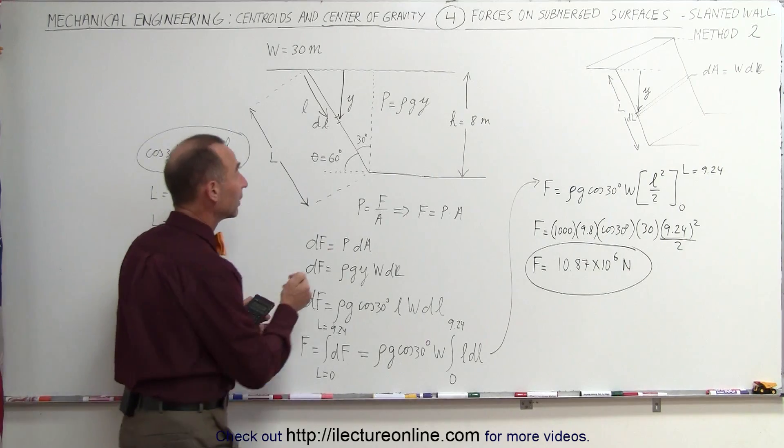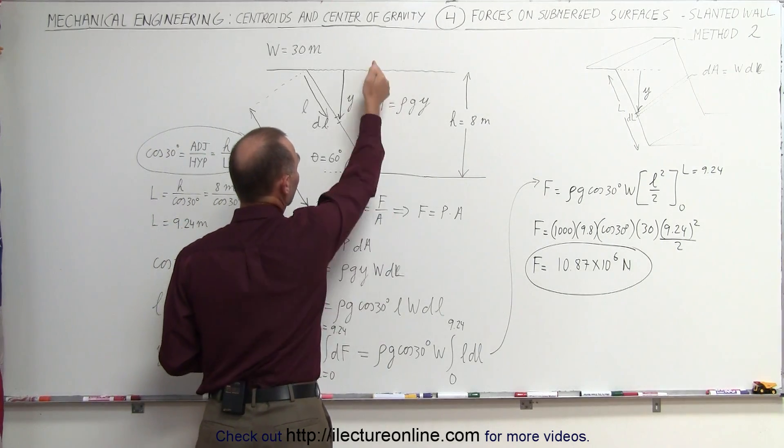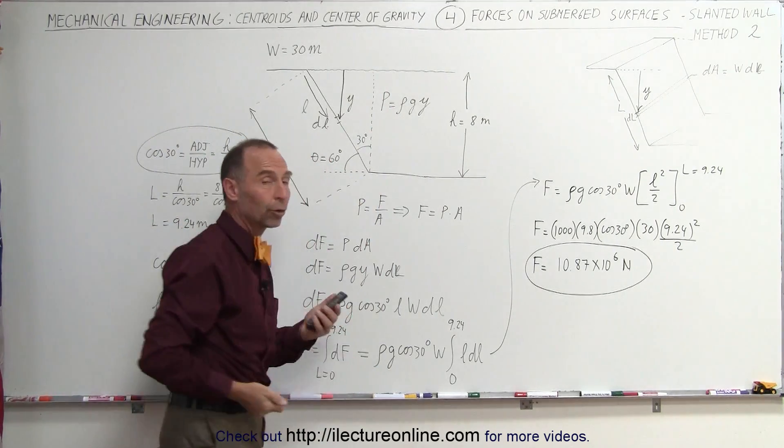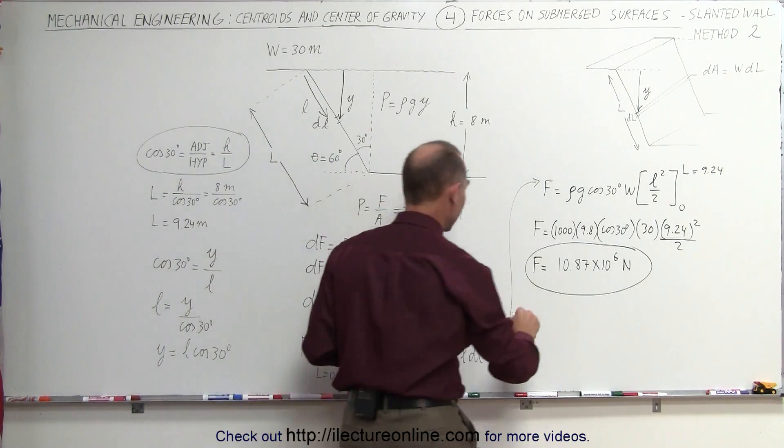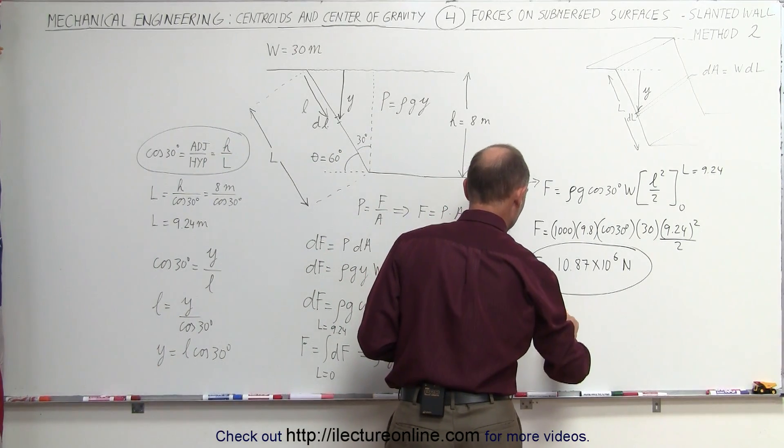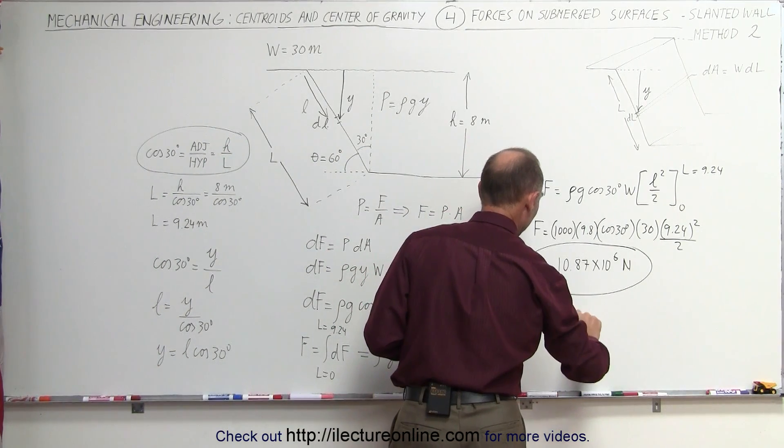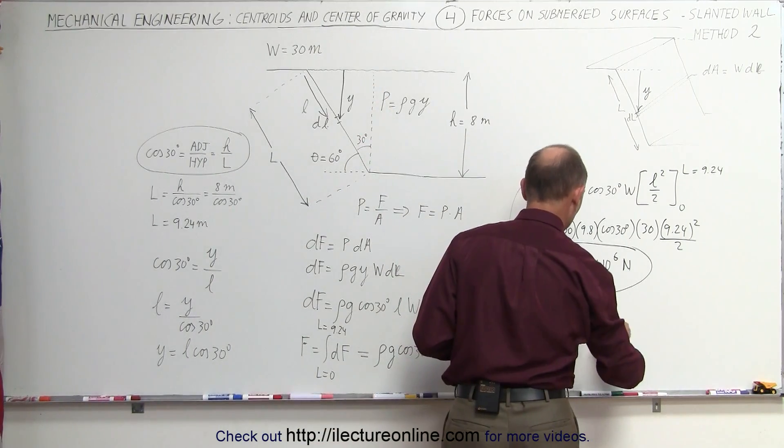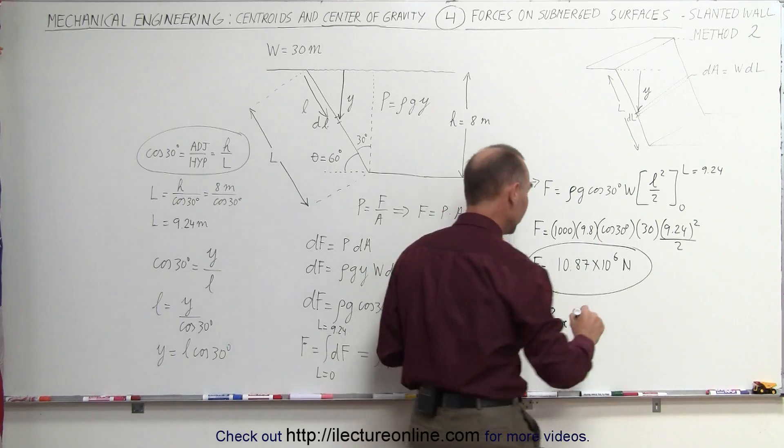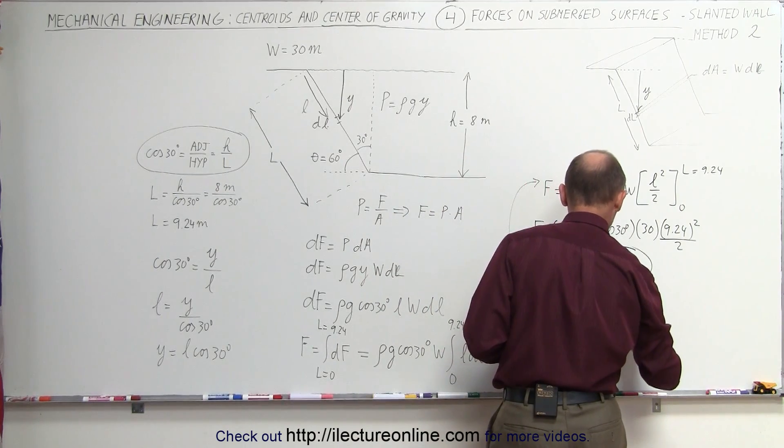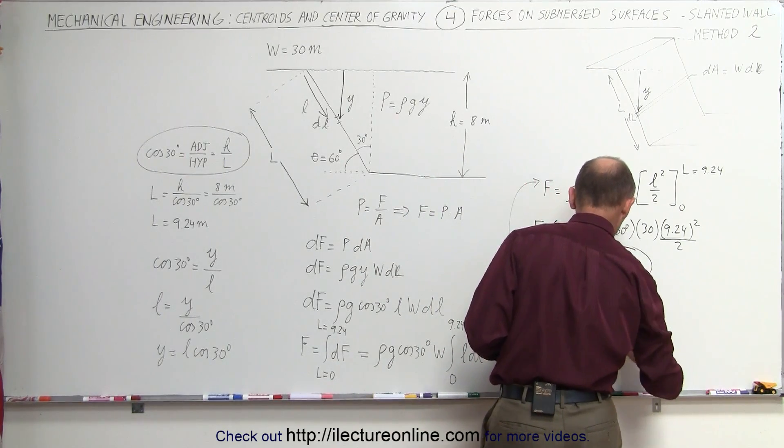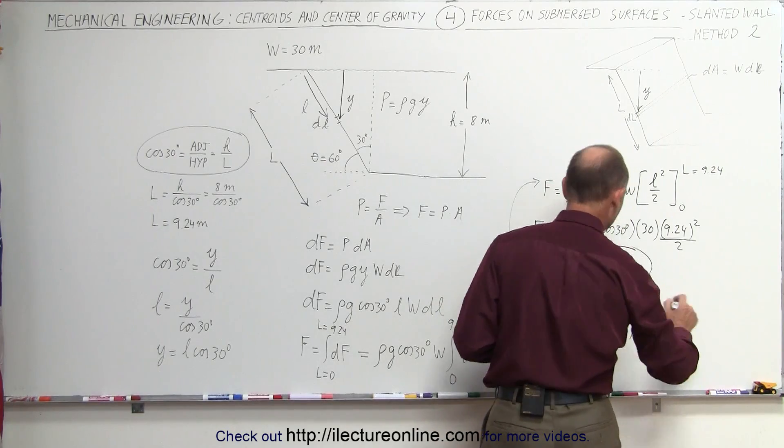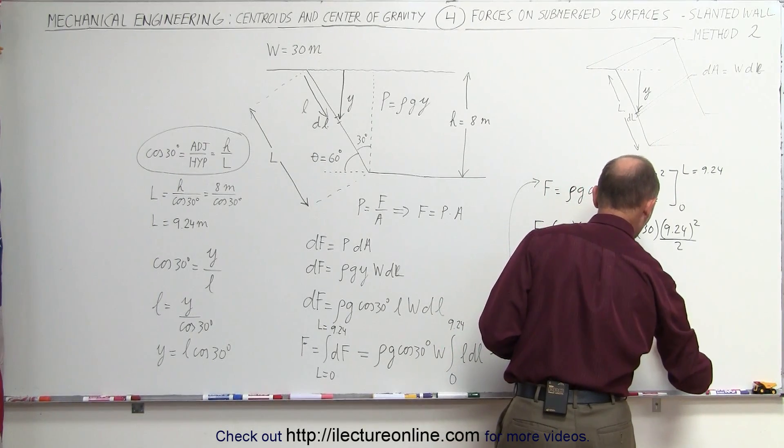Notice that's a different result we would have gotten if the dam had been straight. If the dam had been straight, just for comparison, we can say that the force is equal to the average pressure times the area of the dam. If we had a straight face dam, the average pressure is the pressure at the halfway point. That would be rho g h divided by 2. That's the average pressure. And the area would be h times w.